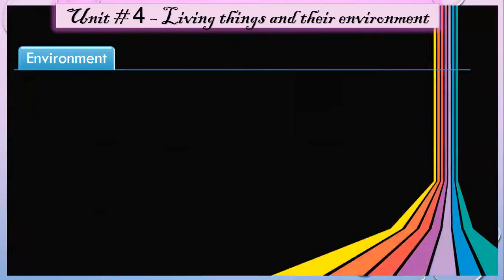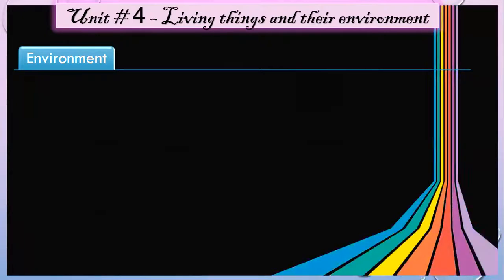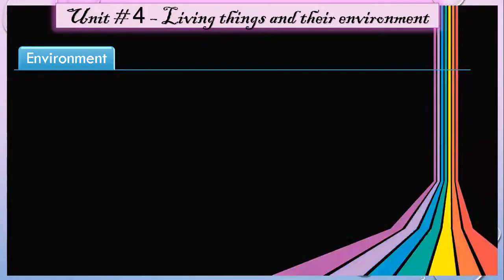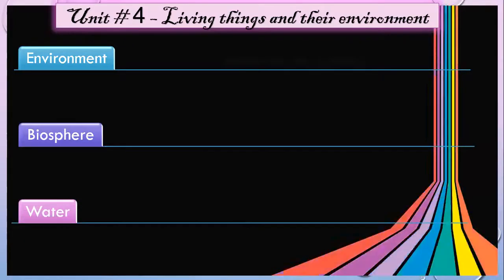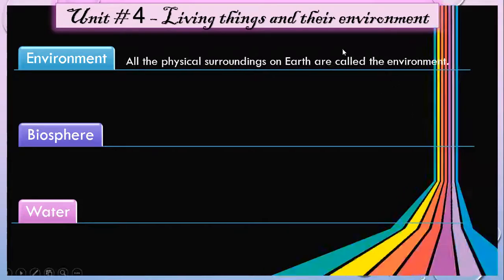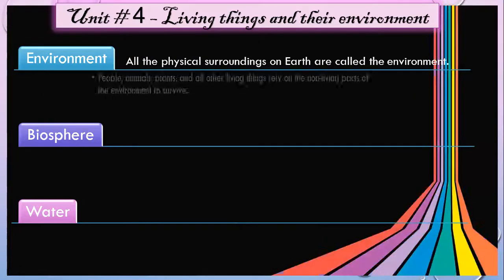Living things depend on each other as well as non-living things for food, energy, support, and shelter. All those things that are around an organism and which affect its way of life are called its environment. So what we can say about the environment is that all the physical surroundings on earth are called the environment.